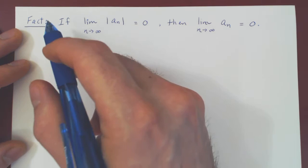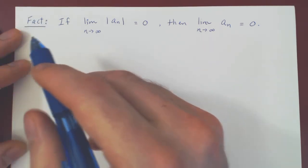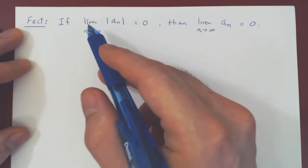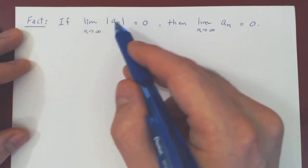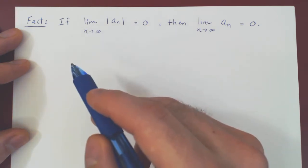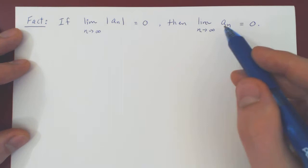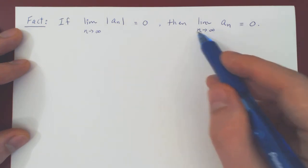Okay, so in this video we want to look at the following simple consequence of the squeeze theorem. The consequence is if the limit of the absolute value of a_n is equal to 0 as n goes to infinity, then the limit of a_n without the absolute value is also equal to 0 as n goes to infinity.